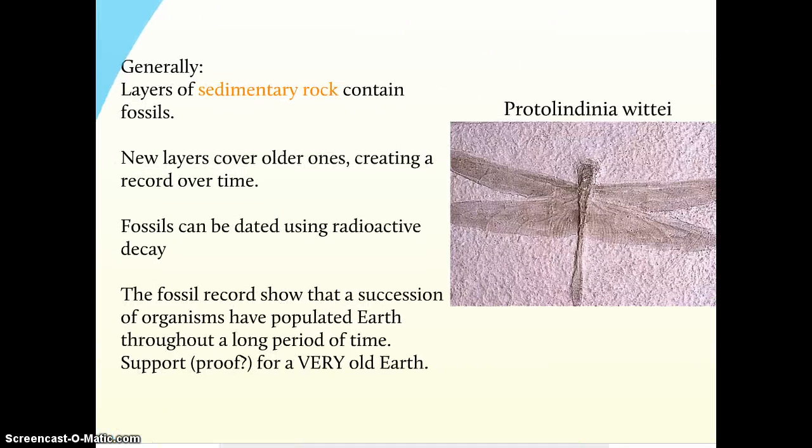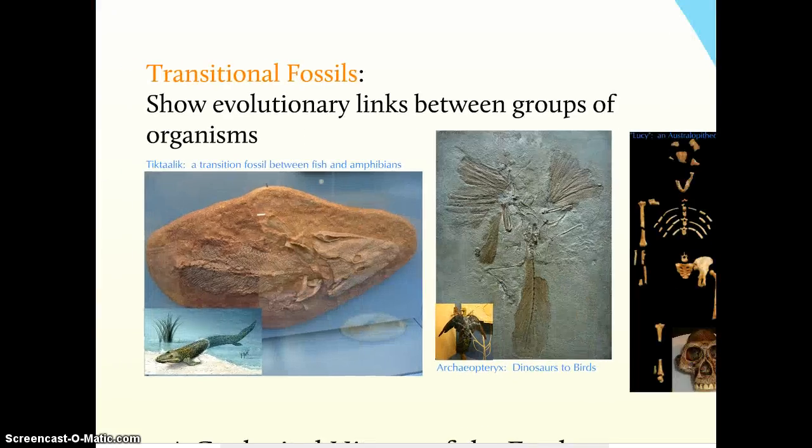We see all sorts of evidence for evolution in the fossil record. There are transitional species, extinct species that are obviously related to those that are in existence today, and what that does is give us a sense of these changes that have occurred in particular lineages of organisms over time. This Protolindiania witte is a nice example as well. Looks like a dragonfly, but it has a wingspan of approximately three feet, supporting the idea that life has changed over time.